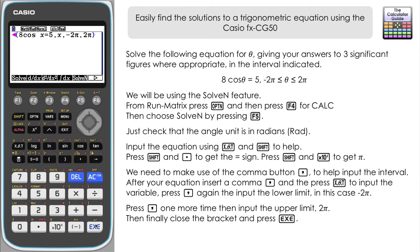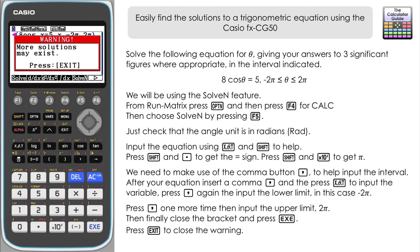So all we need to do now is press execute. Now it does flash up a warning here: more solutions may exist. I think that's just a general warning that there might be certain situations where it doesn't catch every solution. Certainly in the two questions that we're doing here it's got all the relevant solutions. I'll probably say that's the case for 99% of the calculations you're going to be doing, so try not to worry about this one too much.